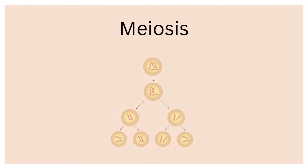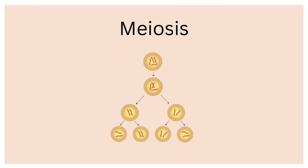Germline cells undergo division as well in a similar process called meiosis. The same events occur here as in mitosis, except meiosis has a second division step, producing four non-identical daughter cells. This process is mainly needed to make egg and sperm cells for sexual reproduction, and ensures that the resulting organism gets the correct number of chromosomes.